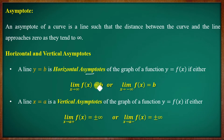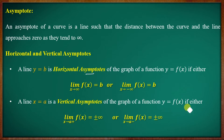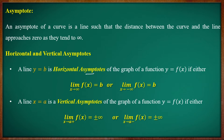That is the vertical asymptote. The line x equal to a is a vertical asymptote of the graph of a function y equal to f(x) if either the limit as x tends to a-plus of f(x) equals plus or minus infinity, or the limit as x tends to a-minus of f(x) equals plus or minus infinity.